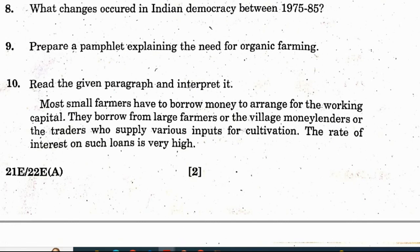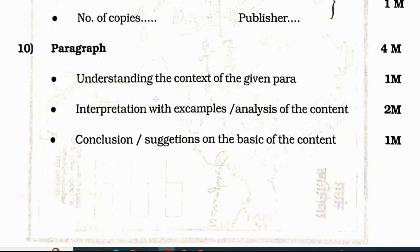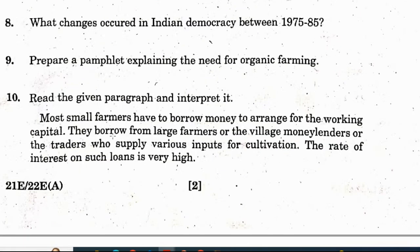Question 10: read the given paragraph and interpret it. 'Most small farmers have to borrow money to arrange for the working capital. They borrow from large farmers or the village money lenders or traders who supply various inputs for cultivation. The rate of interest on such loans is very high.' Marking: understanding the context — 1 mark; interpretation with example and analysis of content — 2 marks; conclusion and suggestion based on content — 1 mark. Total 4 marks. You can write anything relevant to this paragraph based on the mentioned points.